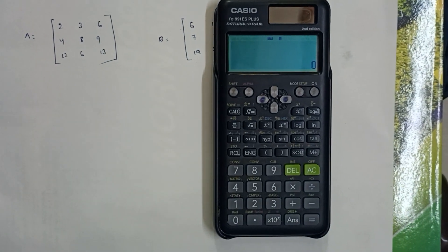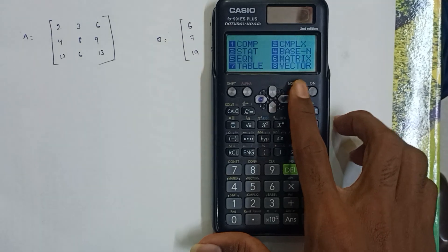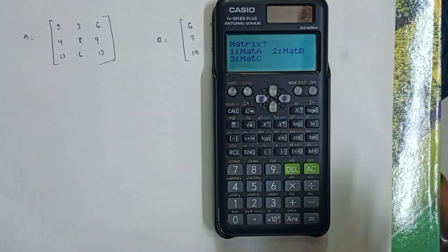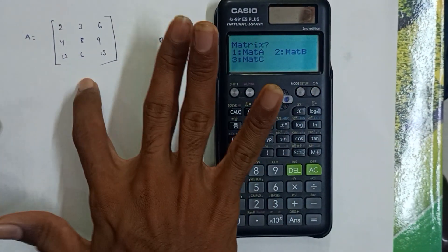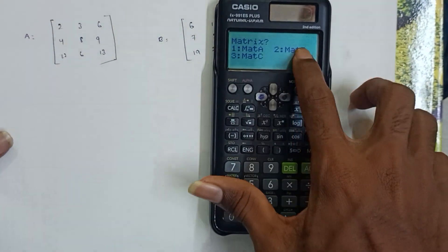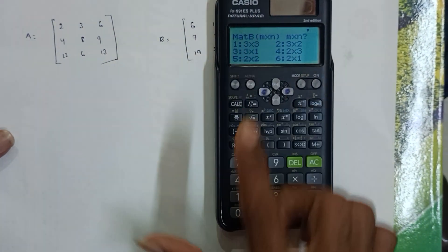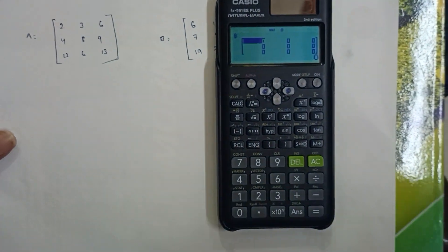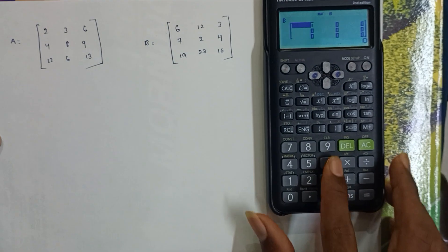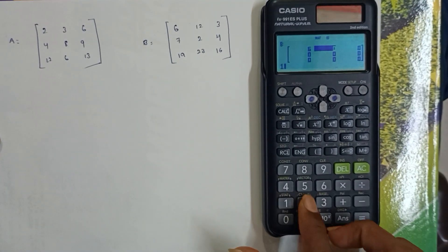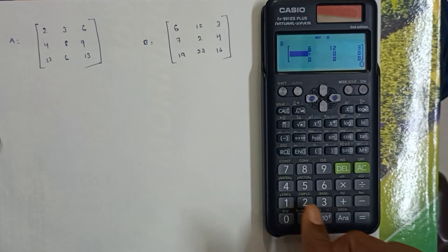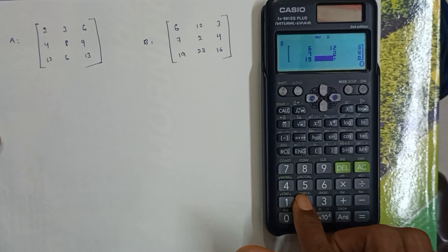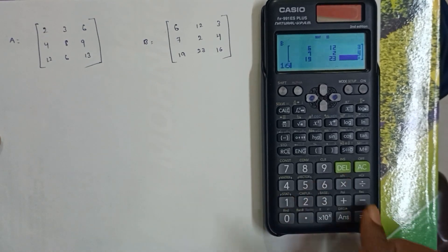Next, mode setup again - press 6. Now we'll select Matrix B. Matrix B is also a 3 by 3 matrix. Press 1, then enter the values for Matrix B: 6, 12, 3, 7, 2, 4, 19, 23, 16. Press equal to save.